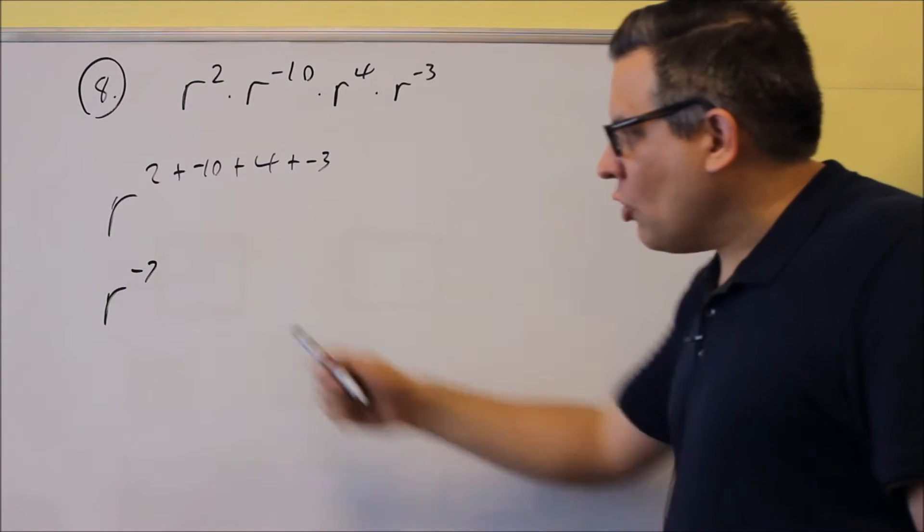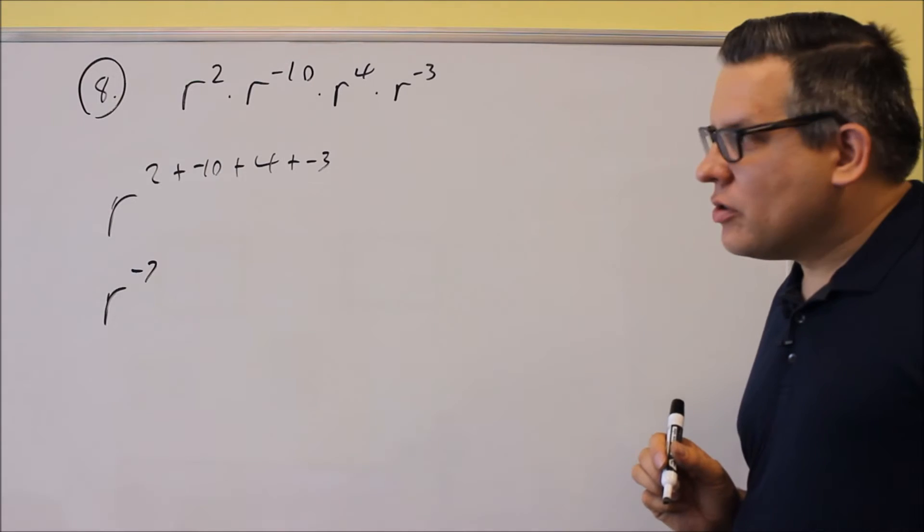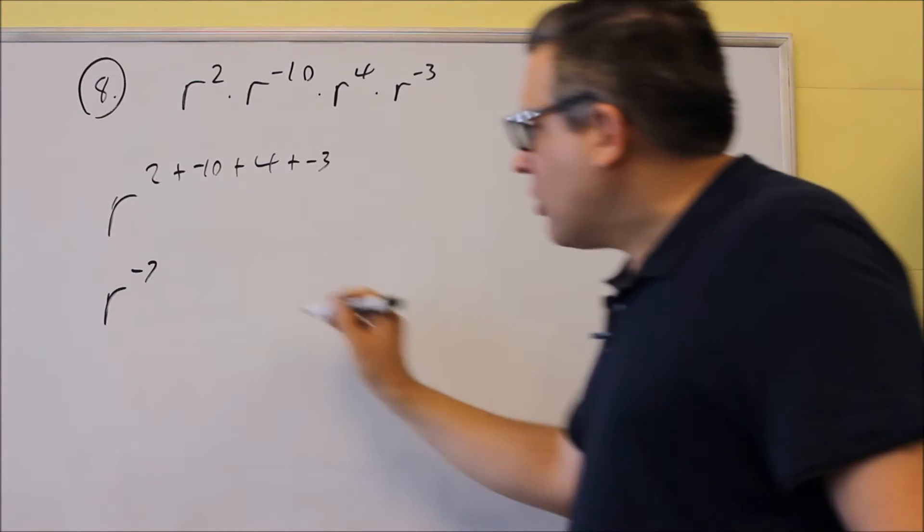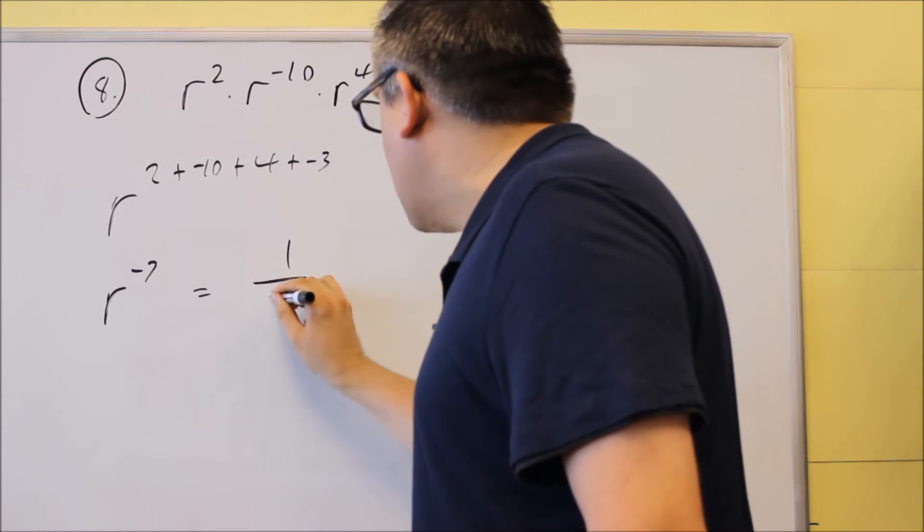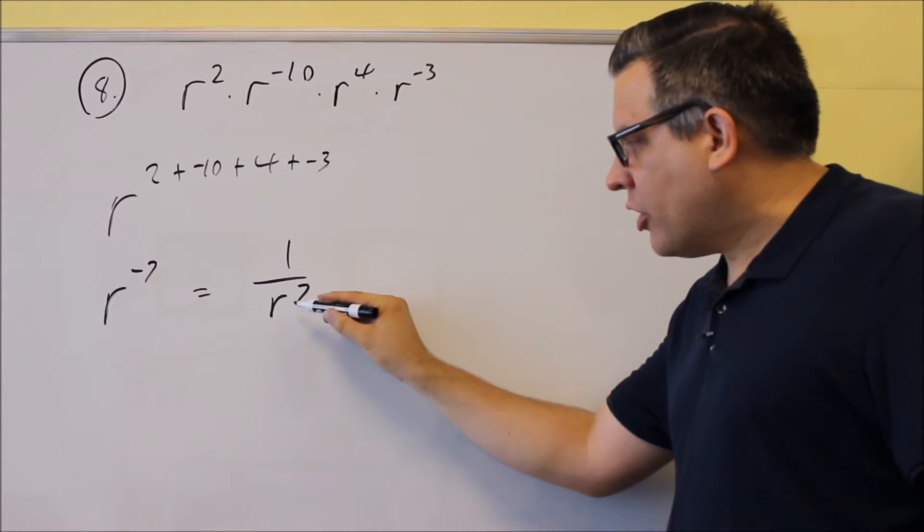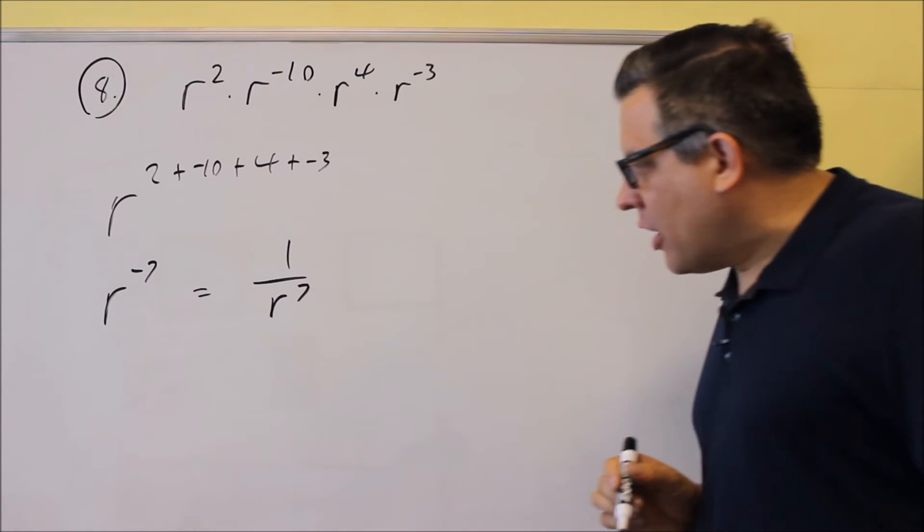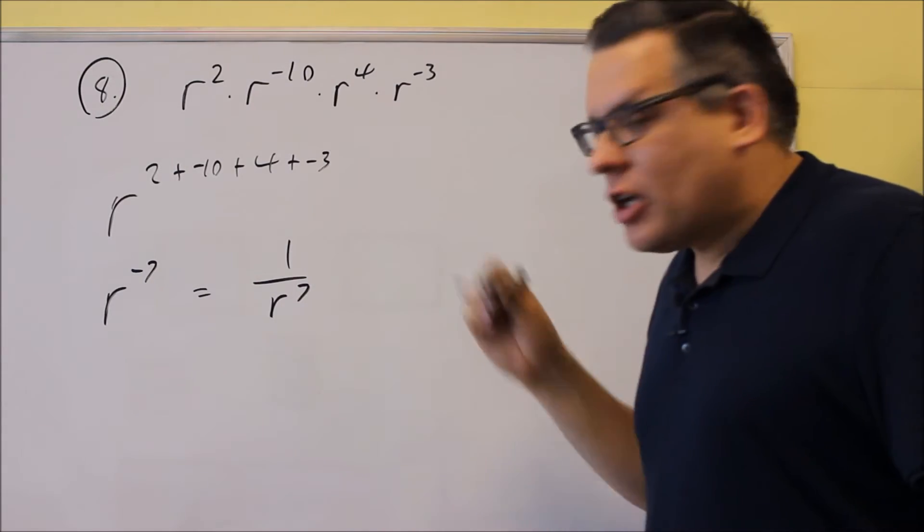Now, the instructions say write your answer with positive exponents. So I don't want to leave my answer in this form. It's a negative exponent. The way that you can write it as a positive is you're going to do this. You're going to put it below the division bar. Now, when you put it below the division bar, then it becomes positive.